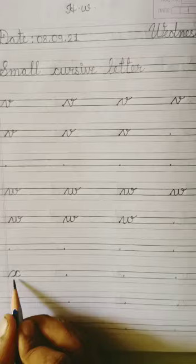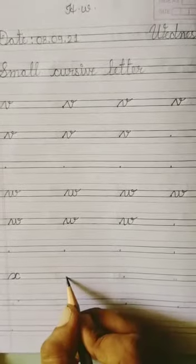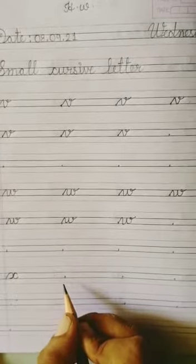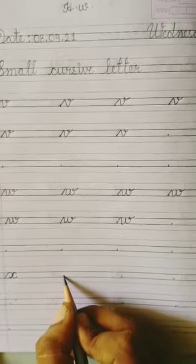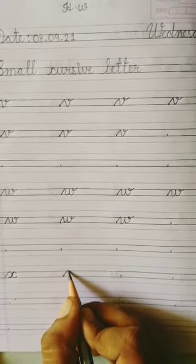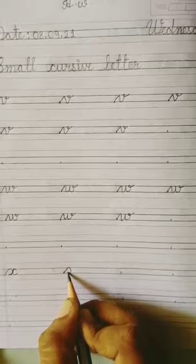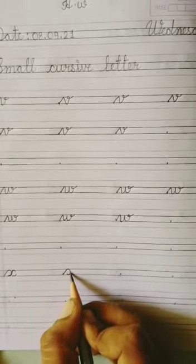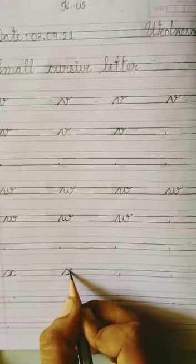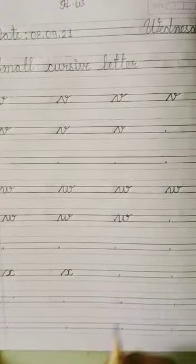Next letter X. X says X. Put a pencil, go up, make a slant line, come down, then curve. Go up again to the same line and curve opposite side.